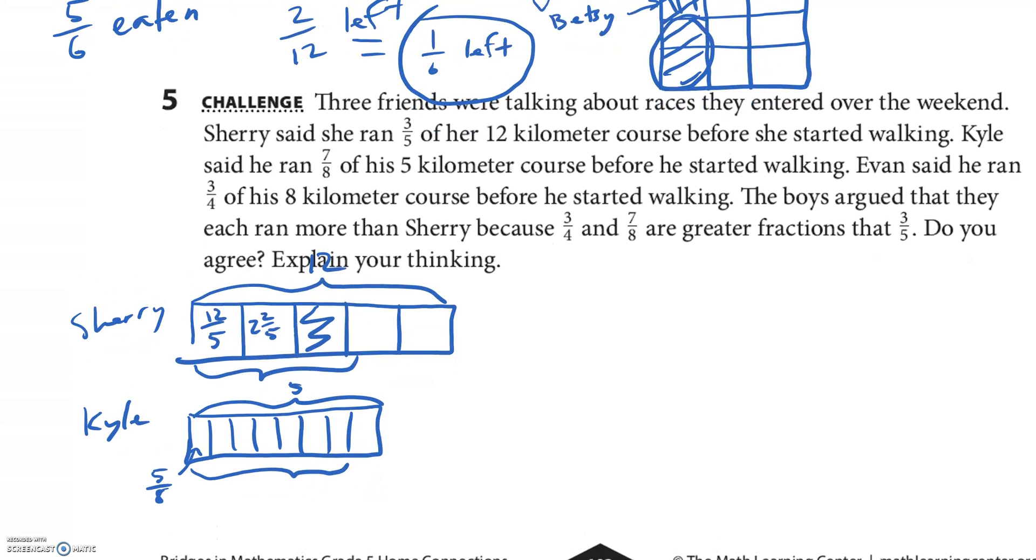Okay, and then we have—I don't have any room left on there—and then we have the other person. No, that was Kyle. So Evan—Evan ran 3/4 of 8. Oh, one that's gonna be nice for us. 3/4—the whole thing is 8. He ran 3/4 of that, so that one we can see the 2s. So who is this? This is Evan. Evan ran 6 kilometers.